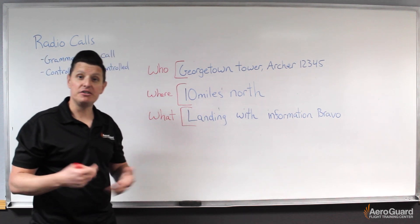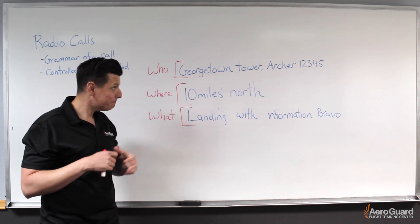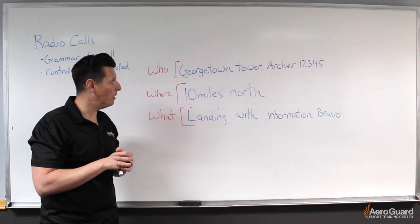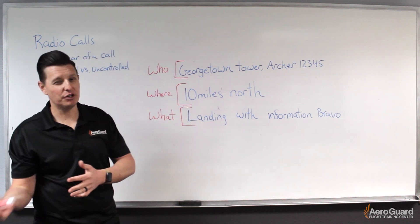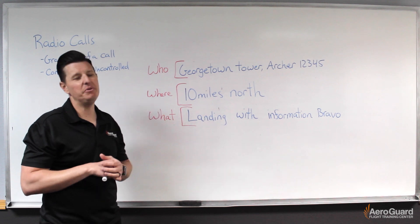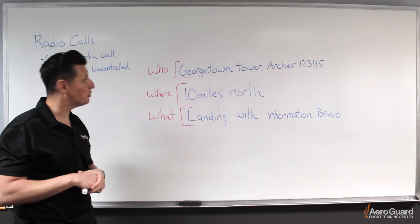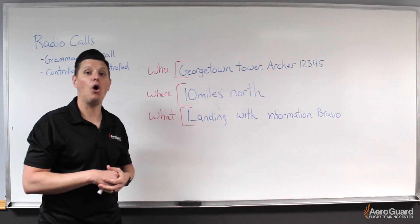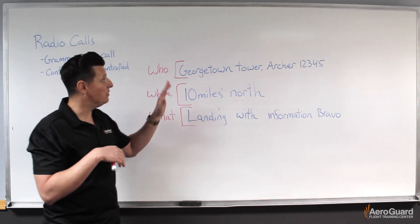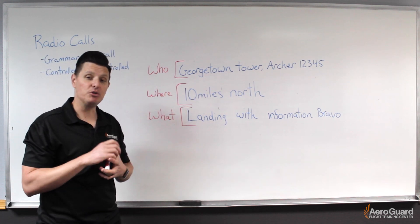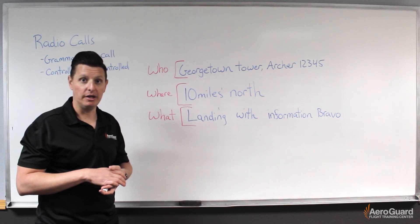This structure applies to pretty much every kind of radio call we make. When we break down the differences between controlled and uncontrolled environments, there could be some slight variations, but this structure generally works for all radio calls. Next, let's take a deeper dive into the differences between a controlled airport environment and an uncontrolled environment.